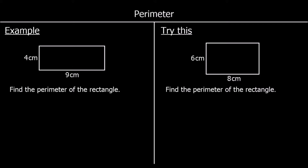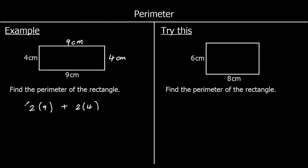Here we've got a rectangle. The question says find the perimeter of the rectangle. We know that the opposite two sides of a rectangle are equal in length. We've got a length of nine, so the opposite side also has a length of nine. And we've got a width of four, so the opposite side will also be four centimeters. The perimeter is all of the lengths of the sides added together. So we've got two nines — two times nine — and two fours. Two nines are 18. Two fours are eight. 18 plus eight is 26. So the distance around the edge of the shape is 26 centimeters.